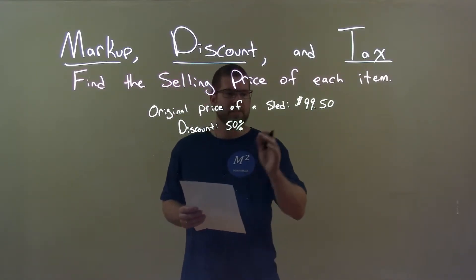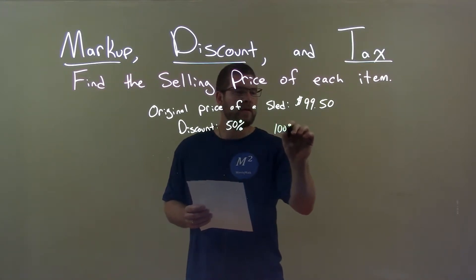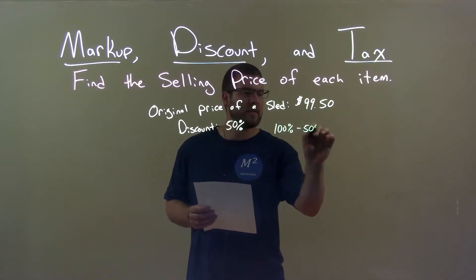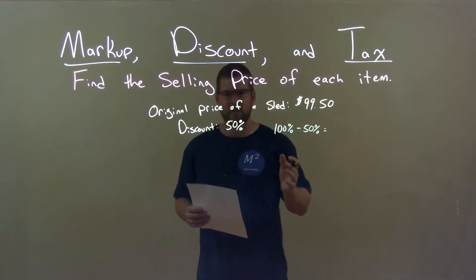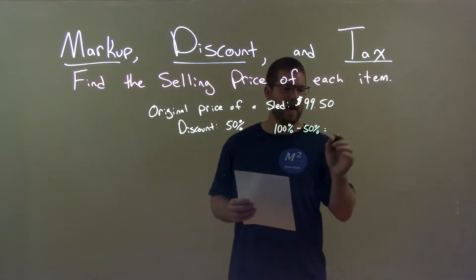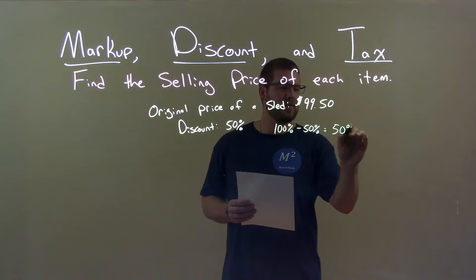Well, what do I need to do? Well, 100% subtracted by the 50% discount gives us the percent of the original purchase price we're actually going to pay, and that's also 50%.